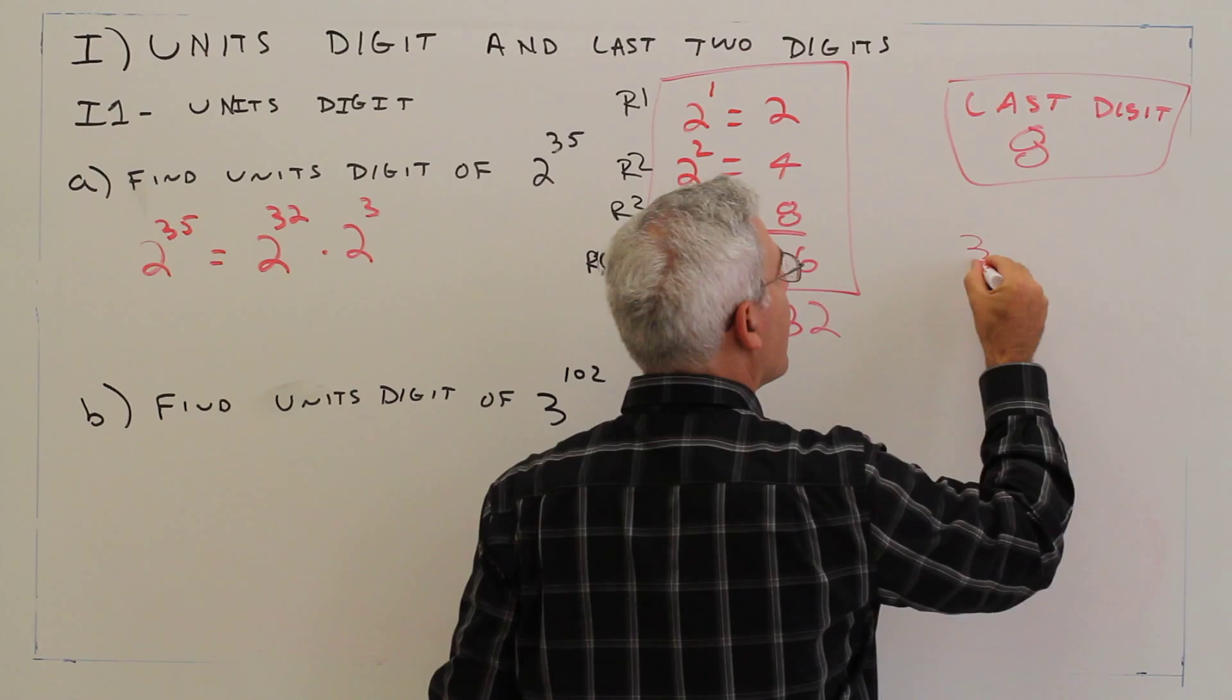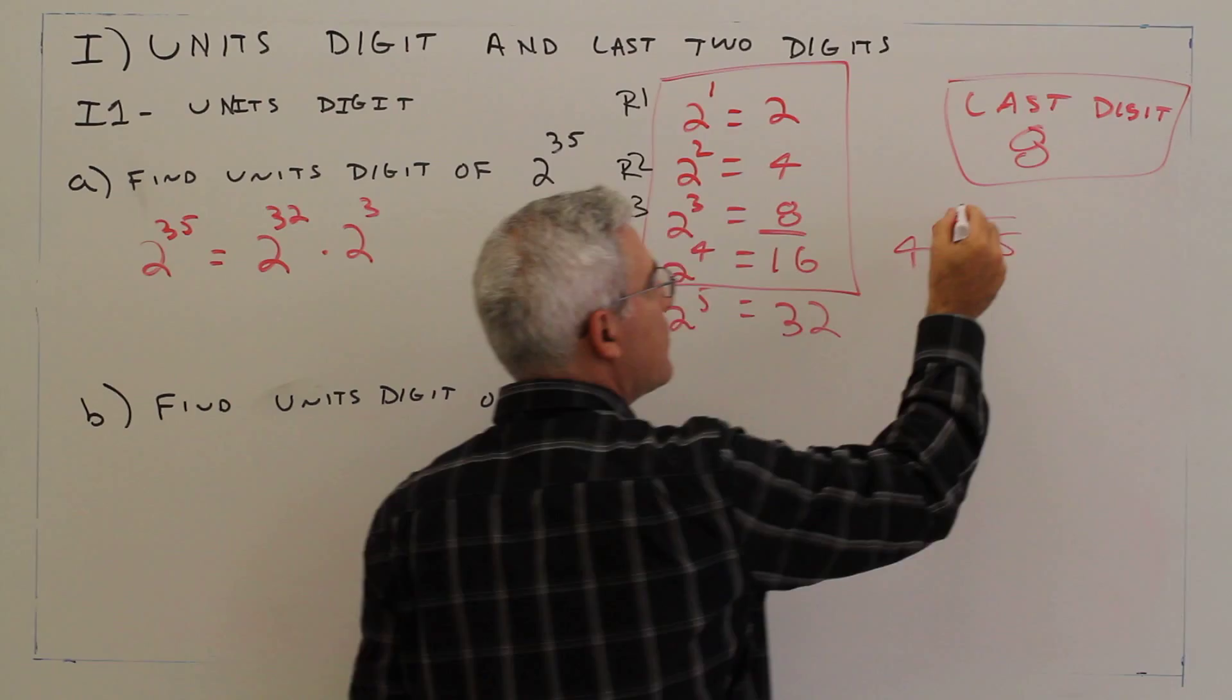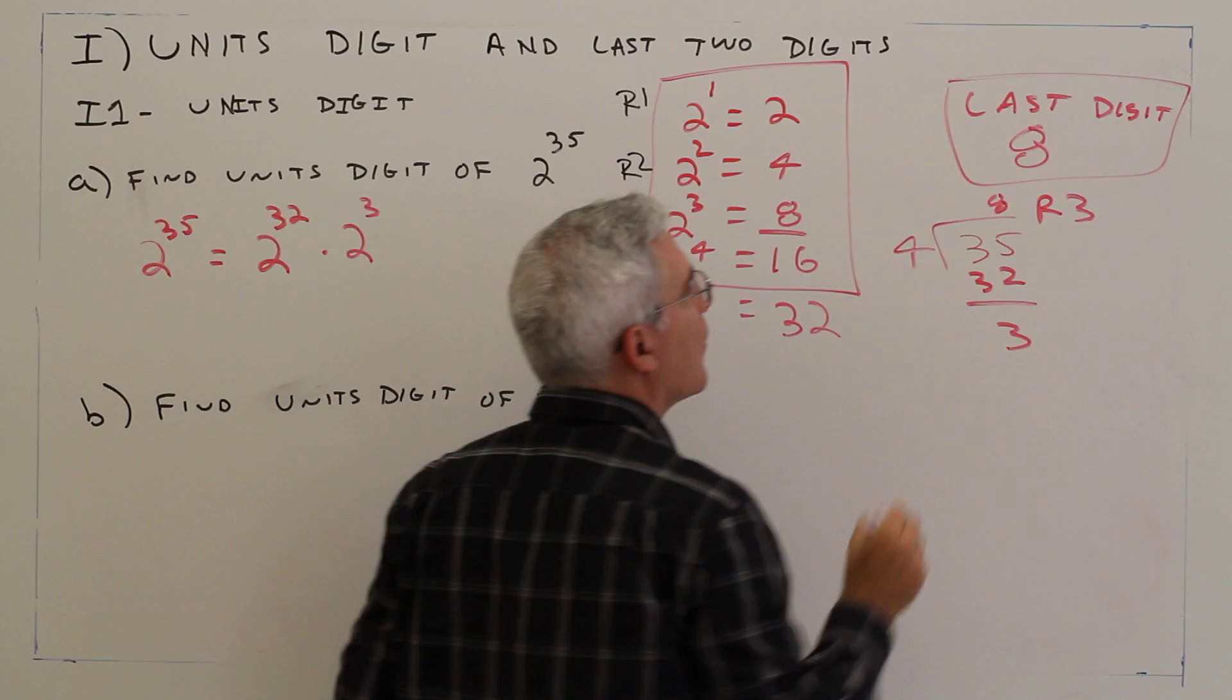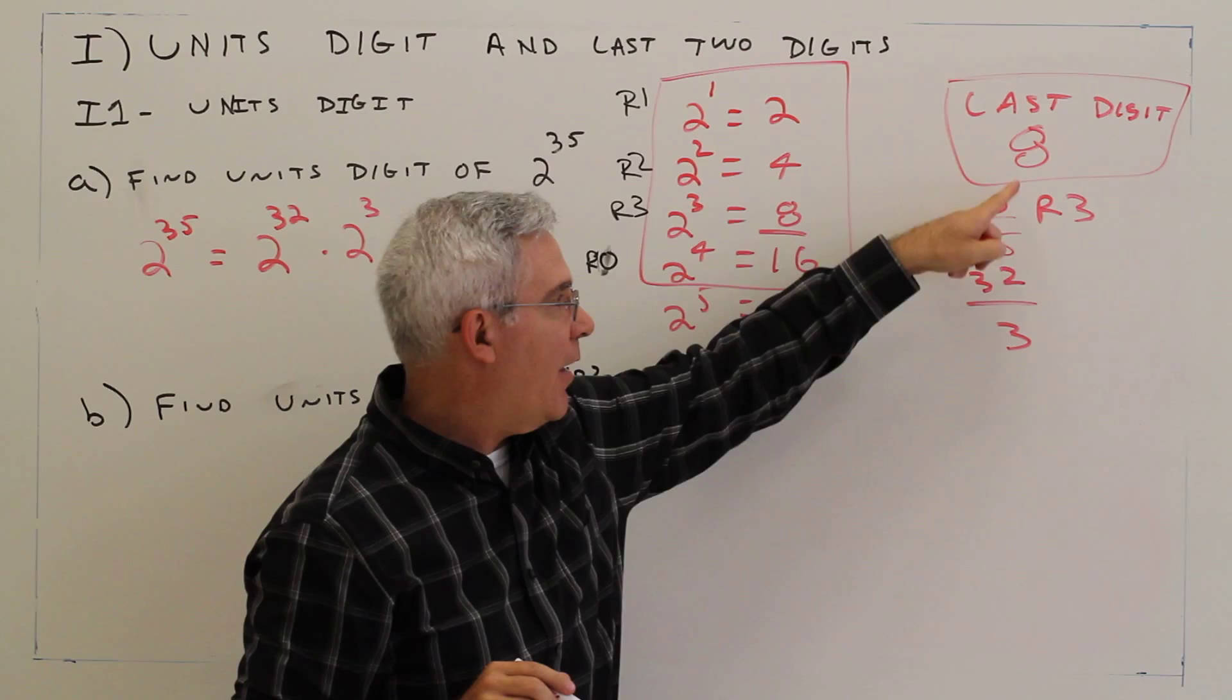So what we could have done is done 35 divided by 4. And the answer is 8 remainder 3.